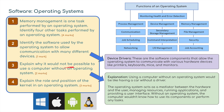Question three: explain why it would not be possible to use a computer without an operating system - two marks. Using a computer without an operating system would be like having a car without a driver. The operating system acts as a mediator between the hardware and the user, managing resources, running applications, and providing a user interface. Without an operating system, the computer wouldn't know how to use its components or perform any tasks.